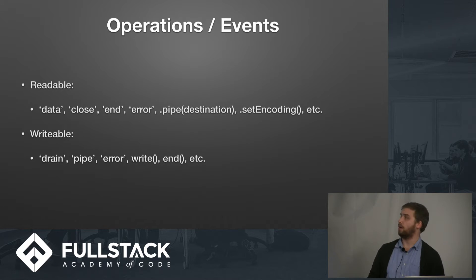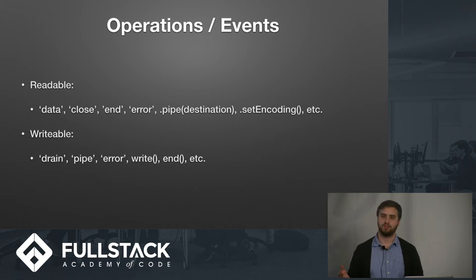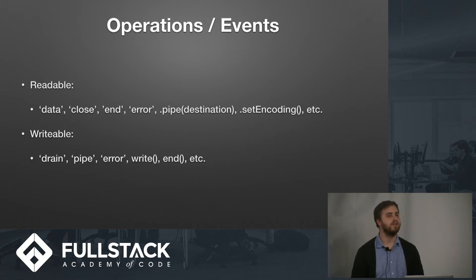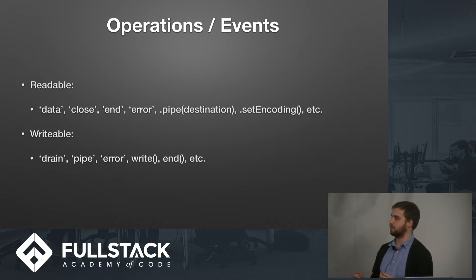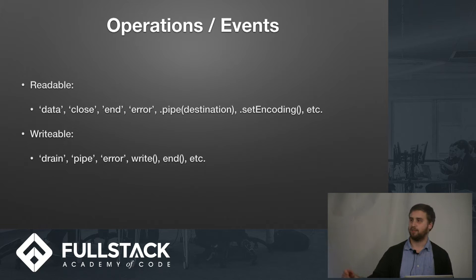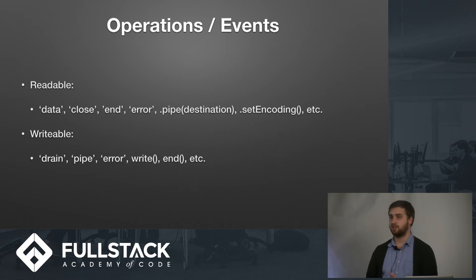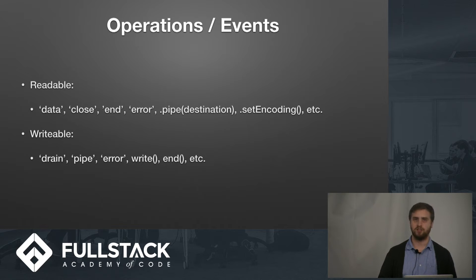So what can we do with Node streams? They're event emitters. We have data events, which is when something is coming in to a readable stream. Close, if we want to stop a readable stream before we've read everything. End, which is emitted at the end of something. Error, if we want to handle errors. We also get methods for dealing with streams — we can pipe the output of a readable stream into a writable stream. Piping is the fundamental mechanic for sending data around inside Node. We can set the encoding, drain a stream, write to it, end a stream to send the end event, and cork and uncork streams if we want to pause and unpause them.